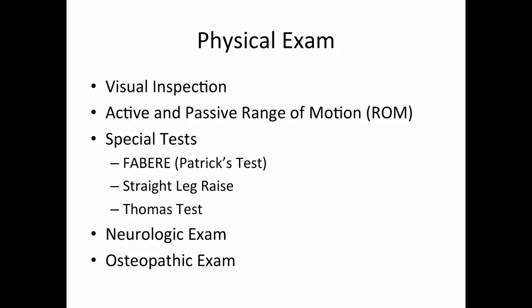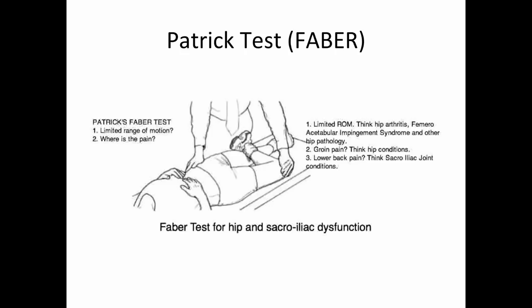The Patrick test, or FABER (flexion, abduction, external rotation), is essentially a figure-four test — abducting and externally rotating the hip. Limited range of motion or pain with this provides evidence. If the pain is more anterior, think hip; if it's more posterior low back, think SI joint. It's nonspecific but can guide you toward a diagnosis based on range of motion and pain location.